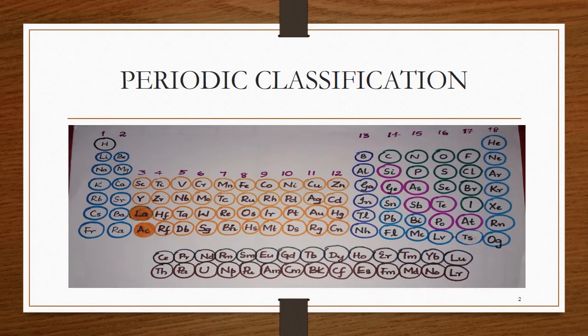The modern periodic table, or the long-form periodic table, consists of four main blocks: S block, P block, D block, and F block. Group 1 and 2 belong to S block. Group 3 to 12 belong to D block. Group 13 to 18 belong to P block. The 14 different elements between lanthanum and hafnium, known as lanthanides, and 14 different elements between actinium and rutherfordium, called actinides, belong to F block.